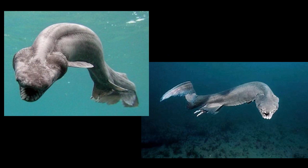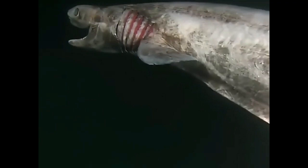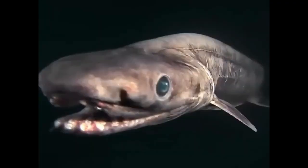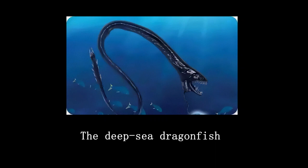Beyond 1,000 meters there is no light at all and the area becomes completely dark. In this zone lives the frilled shark, Chlamydoselachus anguineus, averaging 1.45 meters in length, with a long snake-like body and six pairs of gill slits forming distinctive frills. It is known as a living fossil because its appearance and ecological characteristics have remained unchanged for millions of years, aiding our understanding of shark evolutionary history.